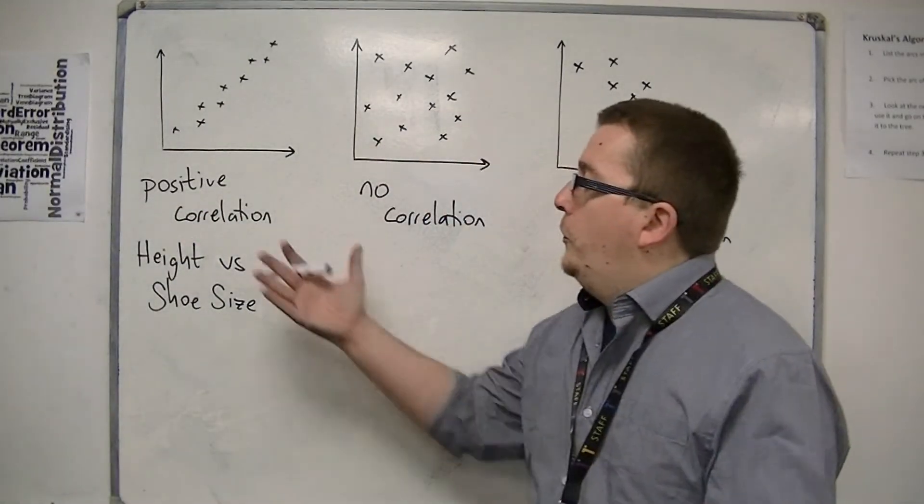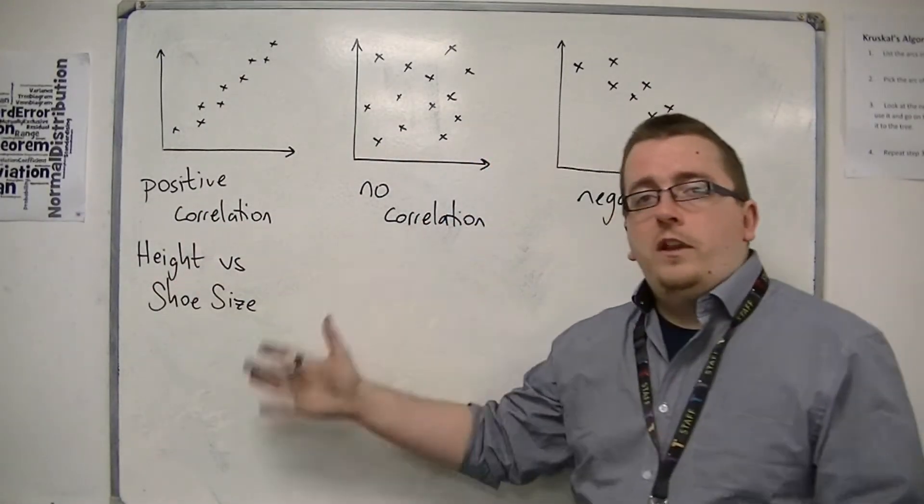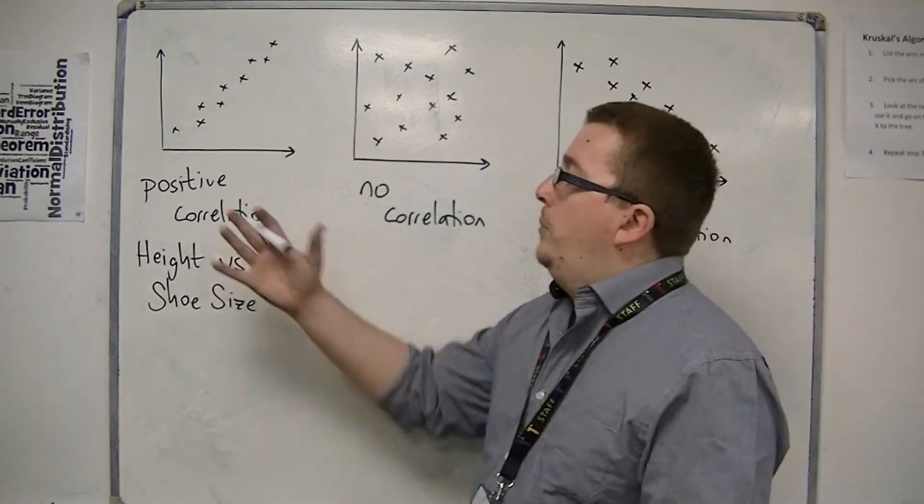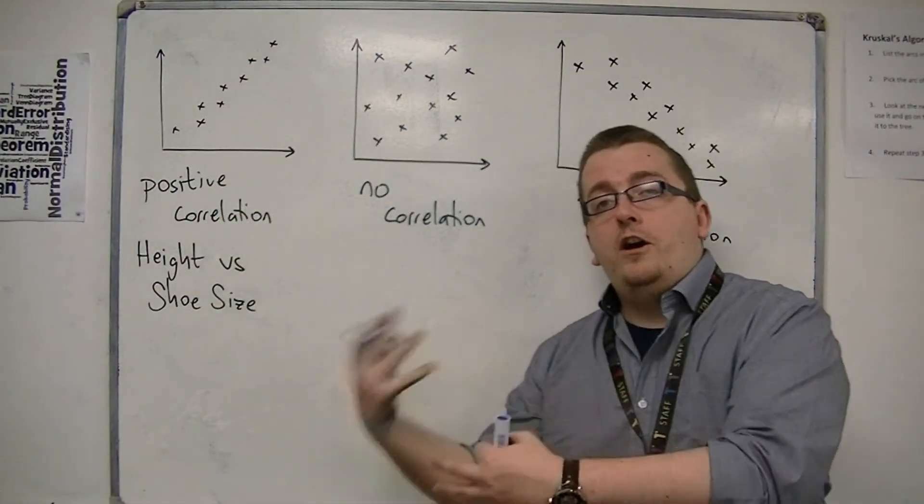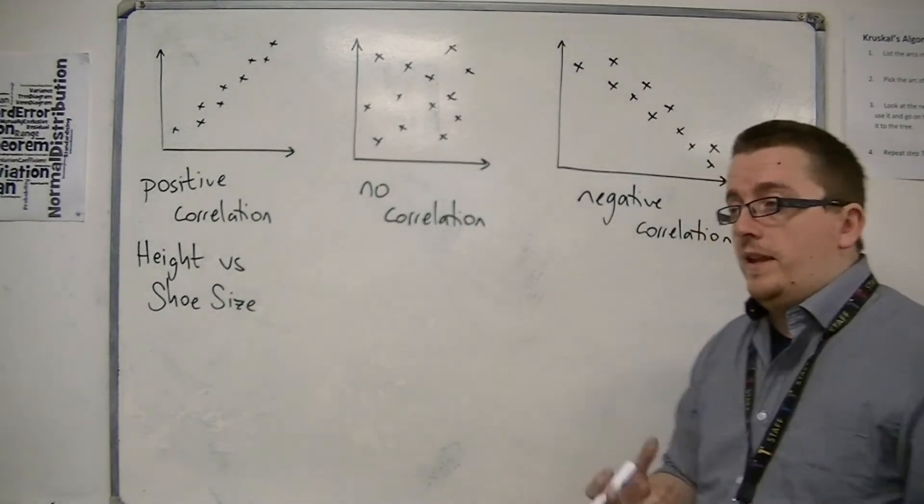In other words, the taller the person, the larger the shoe size. Positive correlation is referring to the larger the something, the more the something else.